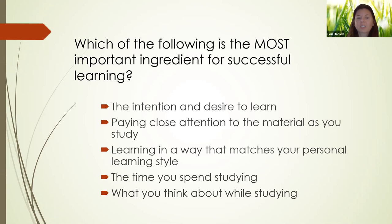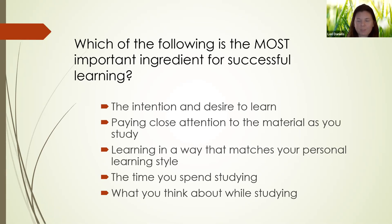Those are: intention and desire to learn, wanting to remember something, paying close attention to it, learning in a way that matches a personal learning style, the overall amount of time spent on something, and then the last choice — what you think about while studying something or trying to remember something. All of these are helpful, but it turns out that really only one of these is the most important, and some of these end up either not mattering at all or being subsumed under the one that matters. The last one is the one that is most important — without it, the others don't really matter as much, if at all.